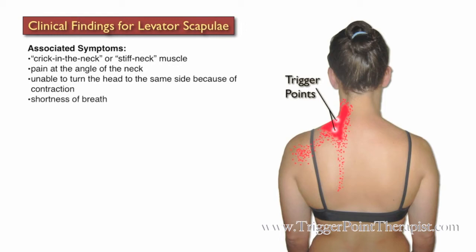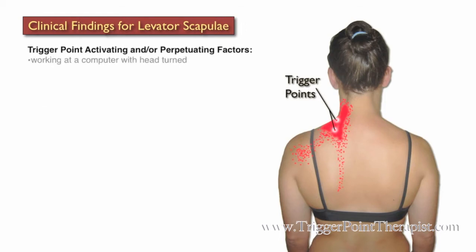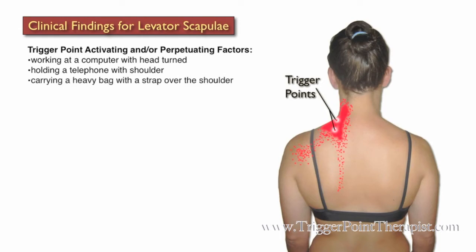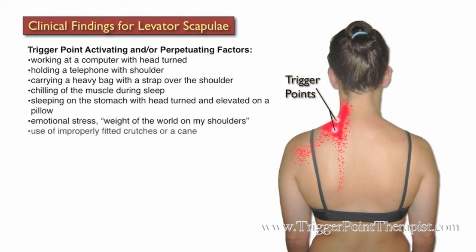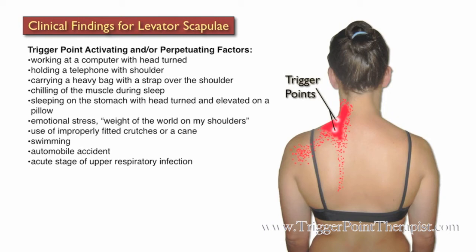They may also complain of shortness of breath. Some factors that may activate or perpetuate Levator Scapula trigger points include working at a computer with their head turned, holding a telephone with the shoulder, carrying a heavy bag with the strap over the shoulder, chilling of the muscle during sleep, sleeping on their stomach with their head turned and elevated on a pillow, emotional stress described as the weight of the world on their shoulders, the use of improperly fitted crutches or a cane, swimming, a car accident, and the acute stage of upper respiratory infection.